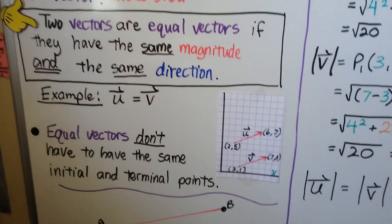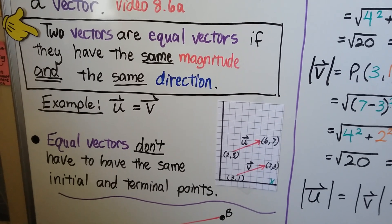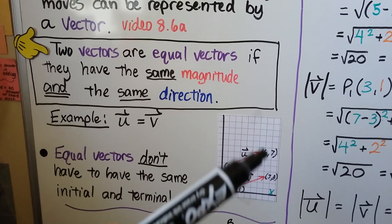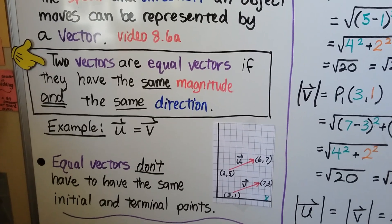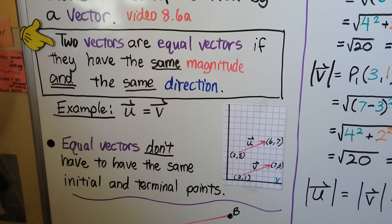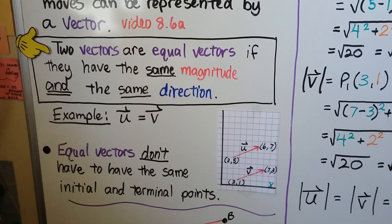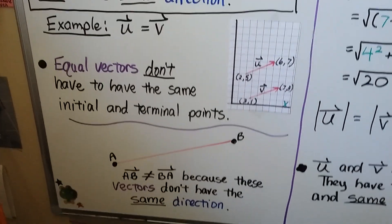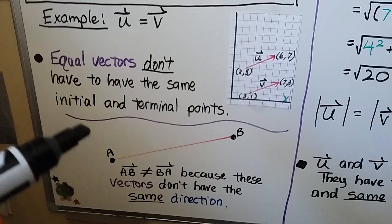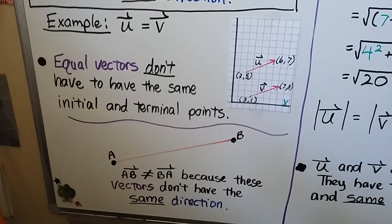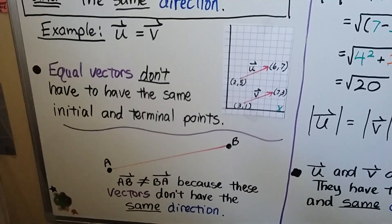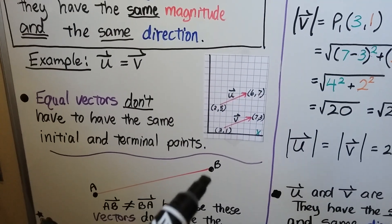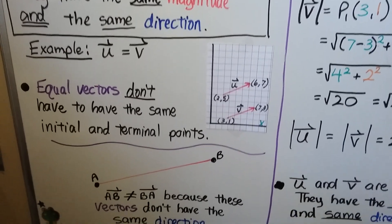Here's an example. Vector u is equal to vector v. The arrowheads are on the same side — they have the same direction. Equal vectors don't have to have the same initial and terminal points, so you can see they have different initial and terminal points but they are equal. Be careful: vector AB is not equal to vector BA because the vectors wouldn't have the same direction. This one starts with A and goes to B; vector BA would start with B and go to A.